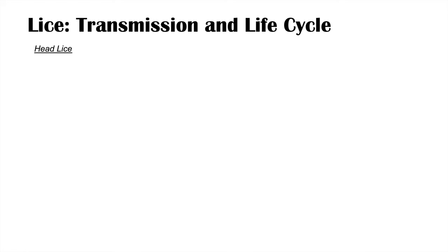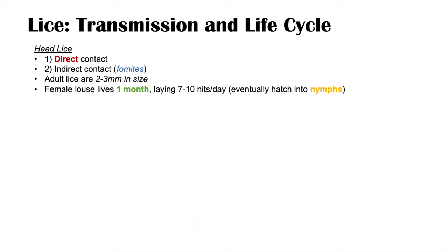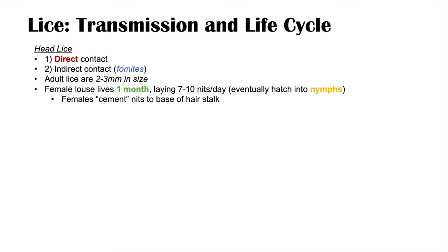Regarding transmission and life cycle: head lice can be transmitted through direct contact and indirect contact via fomites such as furniture or hats. Adult head lice are generally two to three millimeters in size. The female head louse lives about one month, laying about seven to ten nits per day. Nits are the eggs, which hatch into nymphs. The female louse cements the nits to the base of the hair shaft.